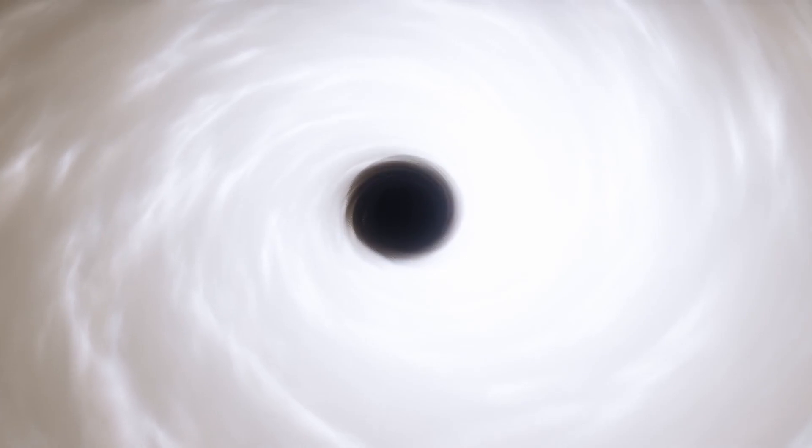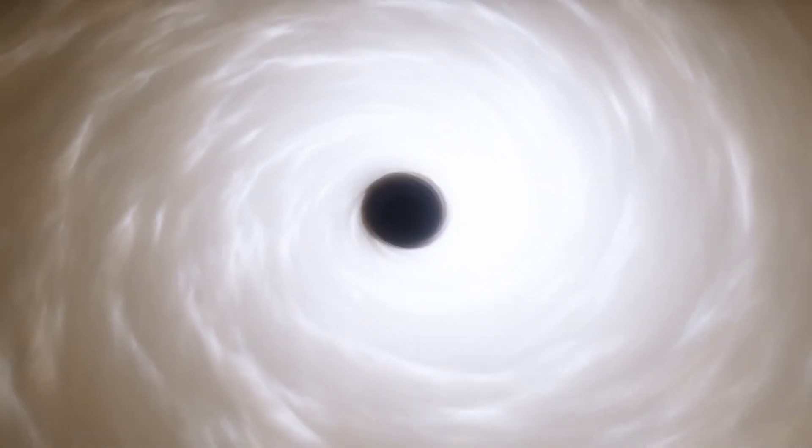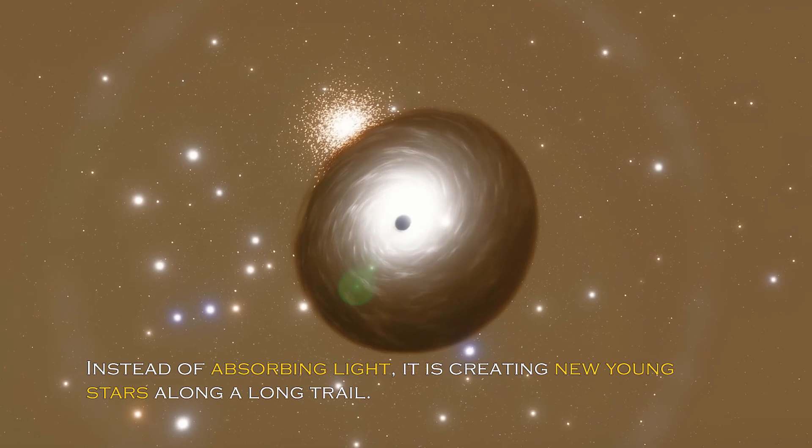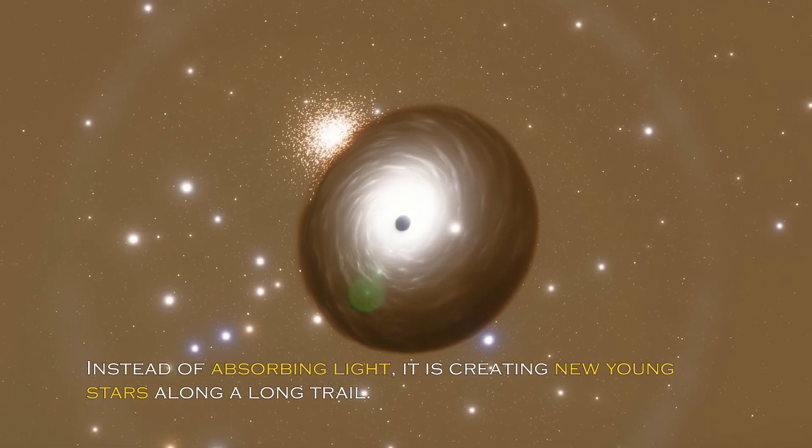Black holes are generally thought of as huge entities that pull everything including light towards them. But the recently observed black hole appears to be having the opposite effect. Instead of absorbing light, it is creating new young stars along a long trail.